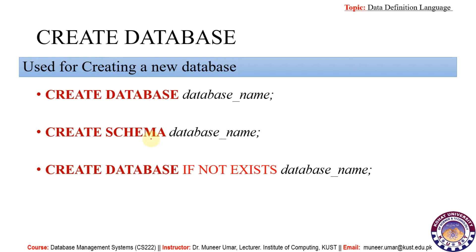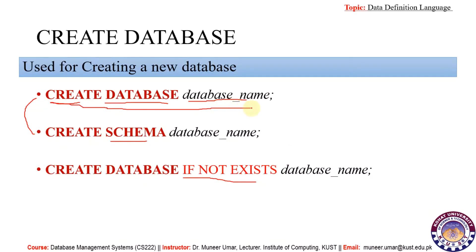The syntax for creating a database: first type CREATE, then the keyword DATABASE, then the name of the database. For example, to create a database named 'student', type CREATE DATABASE student. We can also use SCHEMA instead of DATABASE — it is a synonym; both will create databases. We can also use the IF NOT EXISTS clause to avoid errors if the database has already been created.